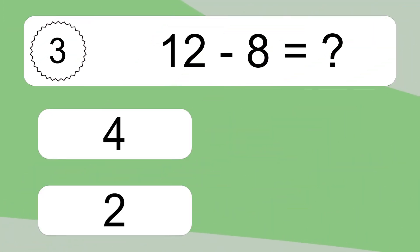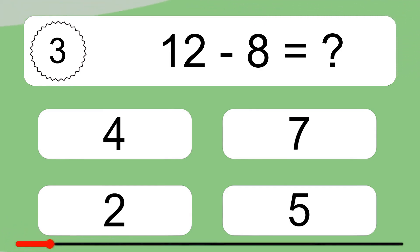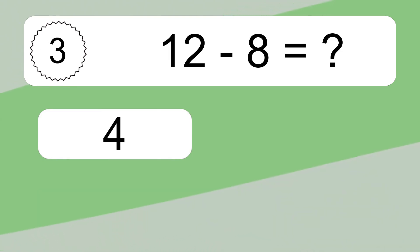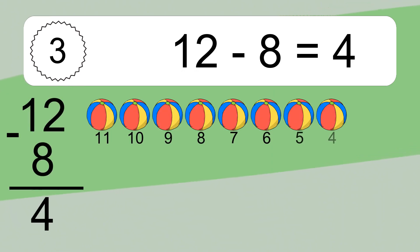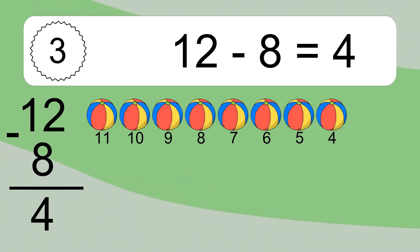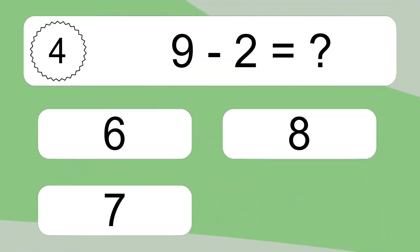12 minus 8 equals what? 12 minus 8 equals 4. Let's count it! 11, 10, 9, 8, 7, 6, 5, 4.